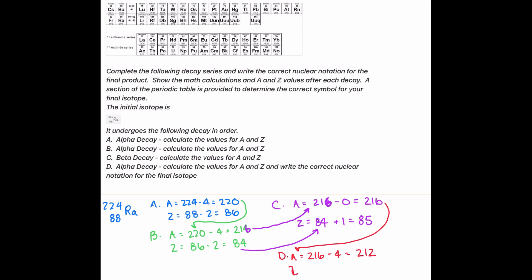And then for the Z number, we'll do 85 minus 2. That's the same thing we did over here. We're just taking that answer from part C, and we're going to get 83.